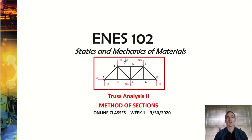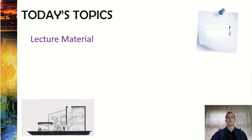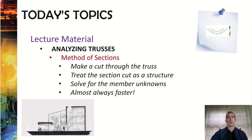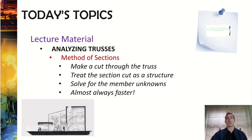Hi everyone, this is going to be our second lecture on trusses. In this lecture we'll be talking about the method of sections, which is usually a more effective and quicker way to solve trusses. To give an overview of today's lecture, we'll talk about another way to analyze trusses — method of sections. The steps are: make a cut through the truss, treat that cut as a single structure, and solve for the members. This method is usually much faster.